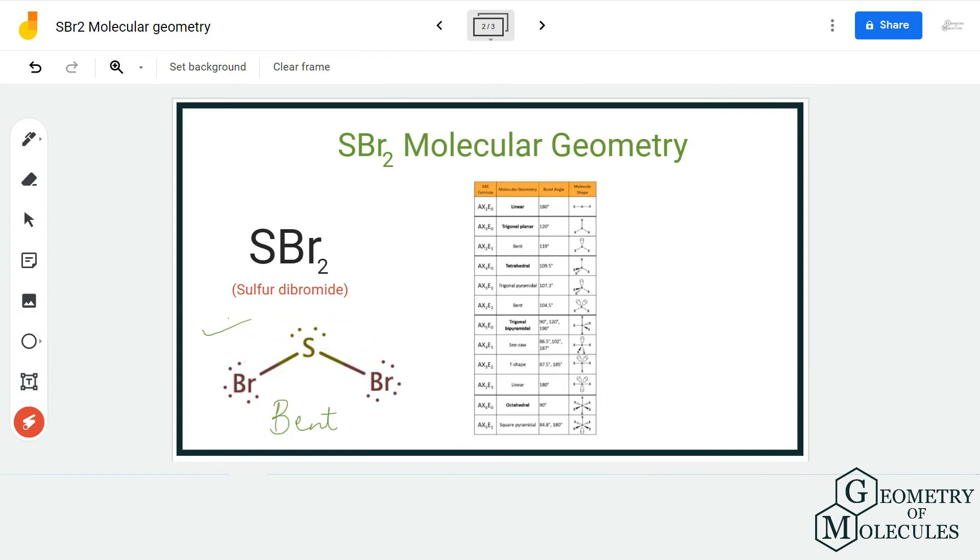The second way to go about it is to find out the AXN notation for this molecule. The AXN notation for this molecule would be AX2E2, because there are two atoms of bromine that are forming bonds to sulfur and there are two lone pairs of electrons on the sulfur atom.